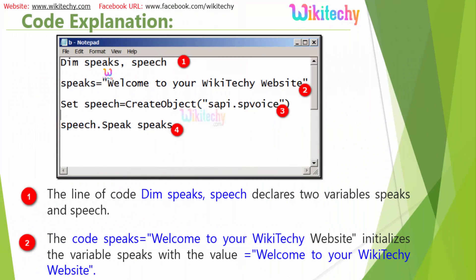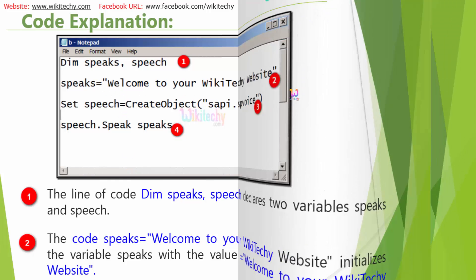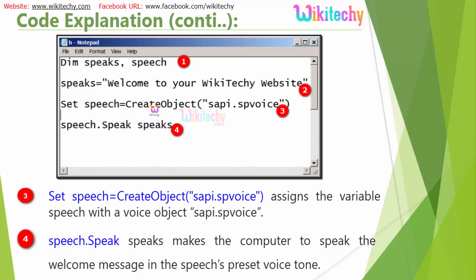Here is the code explanation. These are the library variables — Speaks and Speech. The variable Speaks gives the text information. Afterwards, I am creating an object and assigning it to the variable Speech. Finally, I am enabling the speaking option — this is the line which enables the voice.